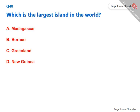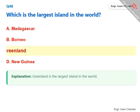Which is the largest island in the world? Greenland is the largest island in the world. The correct answer is C. Greenland.